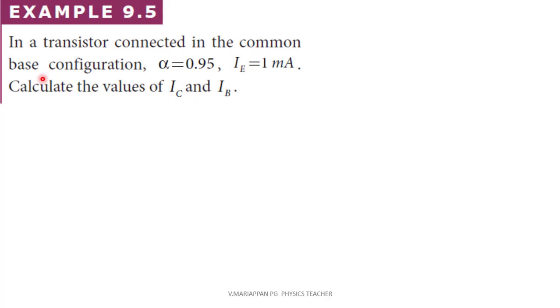Example 9.5: In a transistor connected in common base configuration, alpha is equal to 0.95, IE is equal to 1 milliampere. Calculate the values of IC and IB.